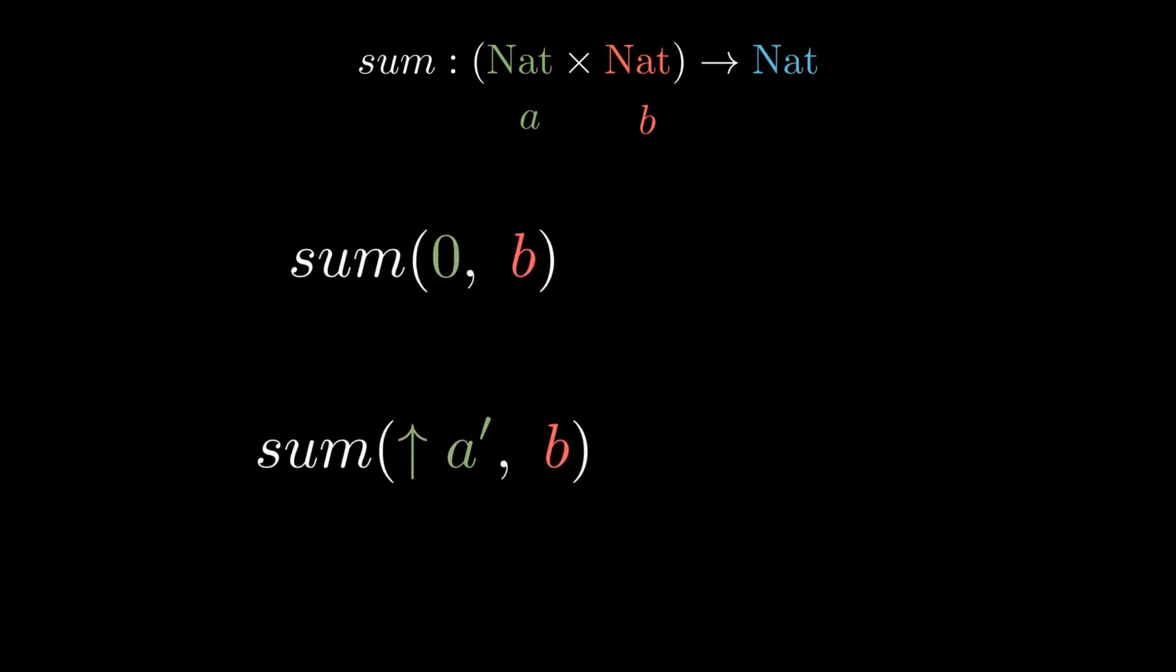If it's 0, then we're just trying to sum 0 and B, so we will just return B. If it's not, we can sum the predecessor of A and B and take the successor of the whole.